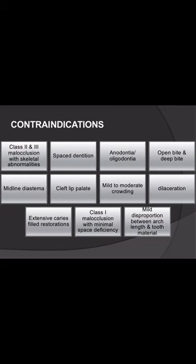Contraindications include class 2 and class 3 malocclusion with skeletal abnormalities, spacing dentition, anodontia, oligodontia, open bite, and deep bite — as serial extraction can worsen deep bite. Also contraindicated are midline diastema, cleft lip and palate, mild to moderate crowding that can be corrected by other procedures such as proximal stripping, dilacerated teeth, extensive caries requiring full restoration, class 1 malocclusion with very minimal space deficiency, and mild disproportion.